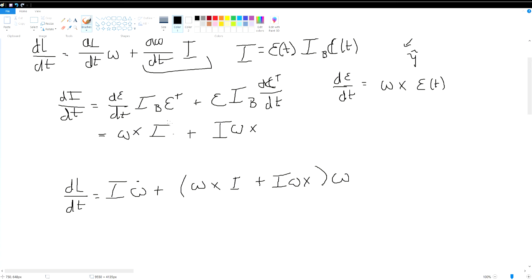Because we've applied our epsilon t times I_b times epsilon transpose. So, because epsilon I_b epsilon transpose is just the moment of inertia tensor in the world view. And because we then say d epsilon/dt I_b epsilon transpose is just omega cross. All that, and that just comes out to I. So, going back down here,